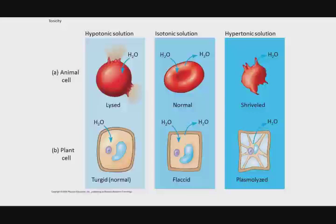In a hypotonic solution, an animal cell will appear normal, while a plant cell will be somewhat flaccid in an isotonic solution. A hypertonic solution causes crenellation — the animal cell shrivels up — and if you're a plant cell, it becomes plasmolyzed.